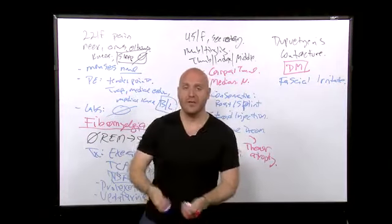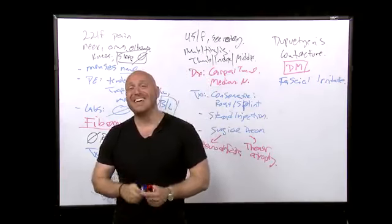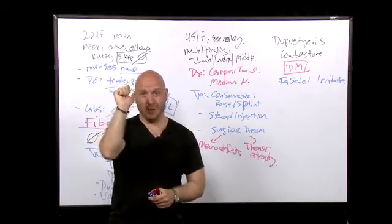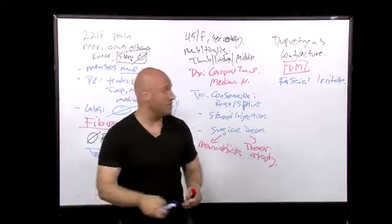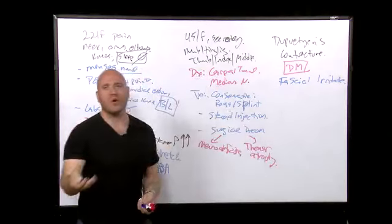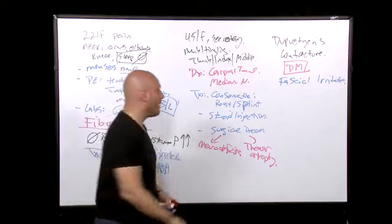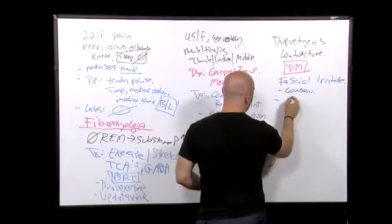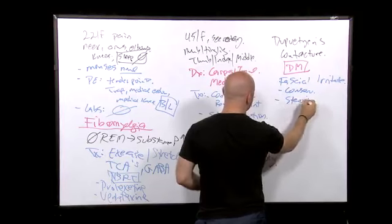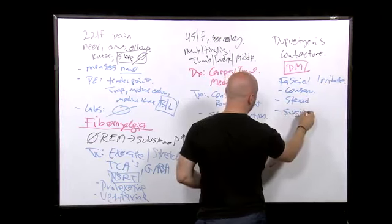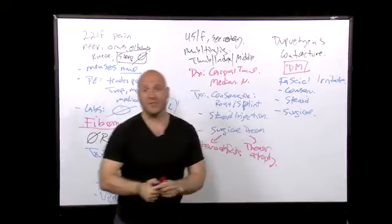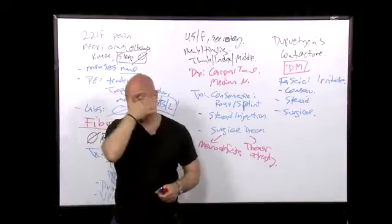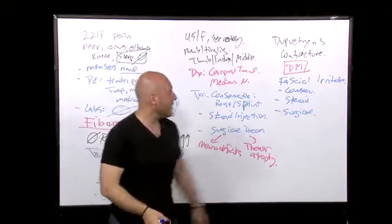How do you treat it? Again like anything else you start conservative. Rest, you can try splinting if the contraction is very significant. I've seen it where like fingers are like this, you know. Then you need steroid injections. So you can of course like anything else guys the order is almost always the same for these types of things. It's conservative initially. Then you go to steroid injections and if they're still contracted, surgical decompression of the fascia. They actually cut the bands. It's fibrous bands and they actually cut them. They cut the bands, that's what they do. That's Dupuytren's contracture.